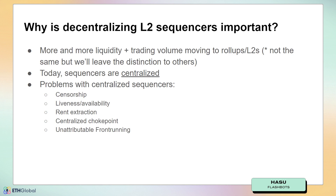So while rollups have these great guarantees — we can always get a transaction mined through the layer one and the sequencer cannot force an invalid state transition — there's still a lot of problems with them. And that's why we need to decentralize them.